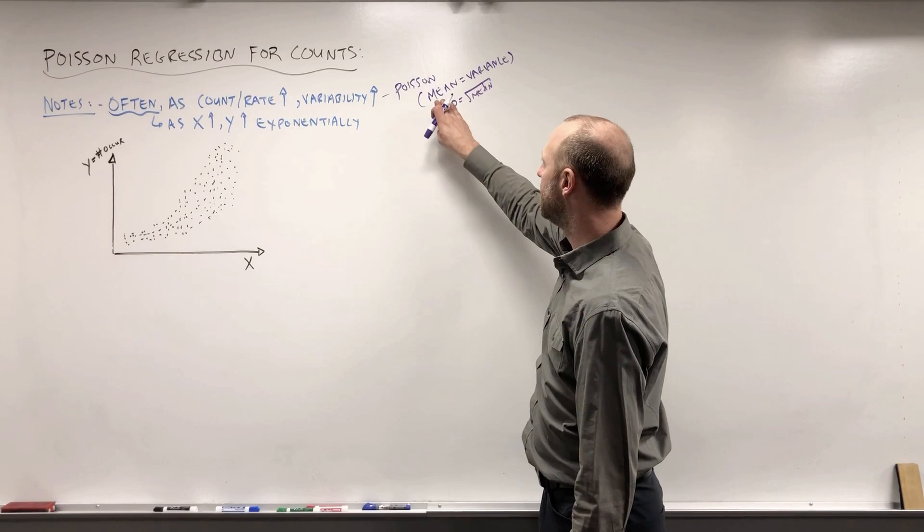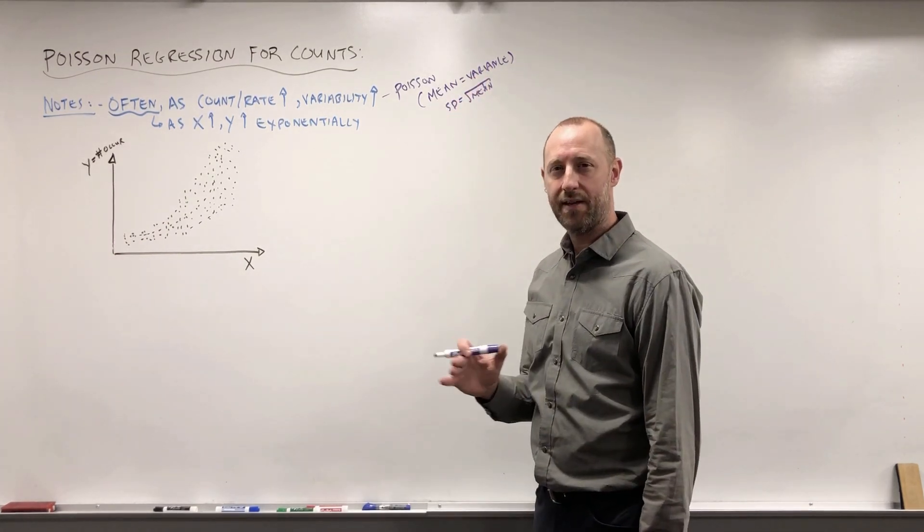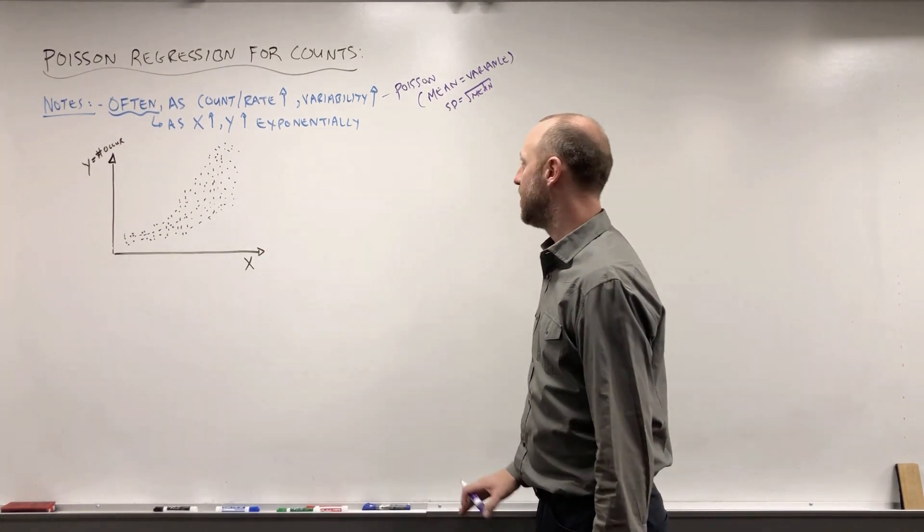The Poisson has it built in that the mean is exactly the same as the variance, which may or may not be true. In next week's lectures, we'll look at how we can check that, and how we can address it if that is not met.